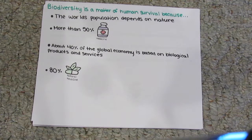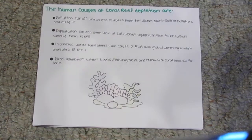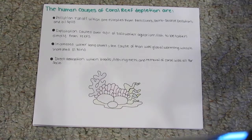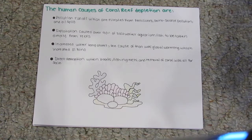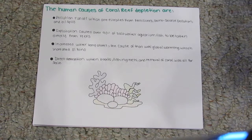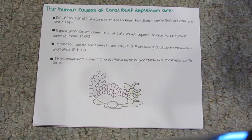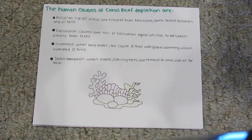Remember the Great Barrier Reef? It has recently died and humans are one of the main causes. The human causes of coral reef depletion include pollution runoff such as nitrates from fertilizers, point source pollution, and oil spills. Exploitation causes over 90% of saltwater aquarium fish to be taken directly from reefs. Increased water temperatures are caused by global warming, which increases El Niño. Direct destruction occurs when boats, fishing nets, and removal of coral take place, all for sale.